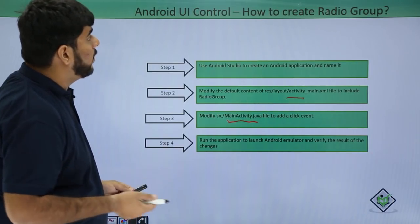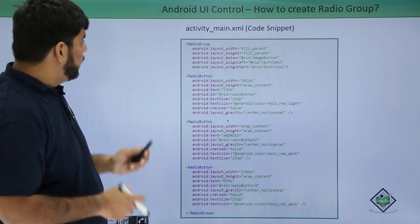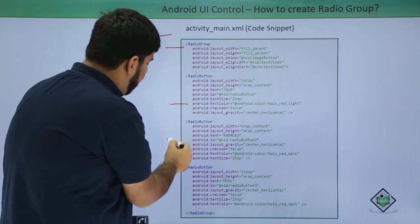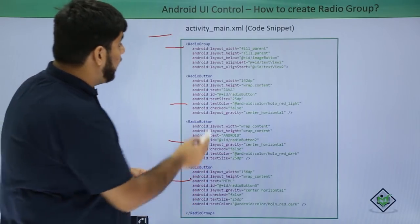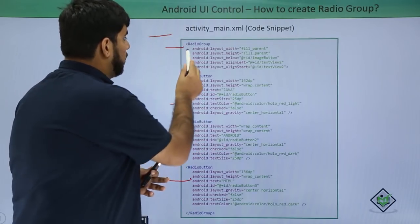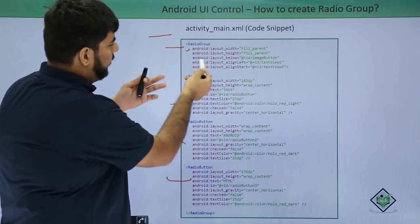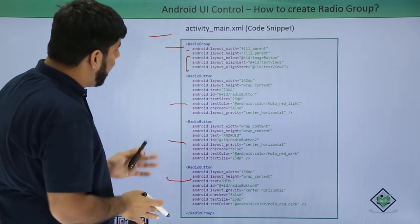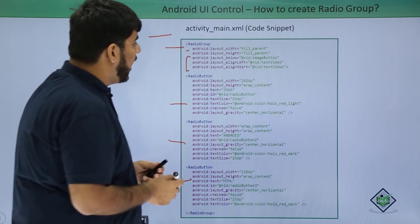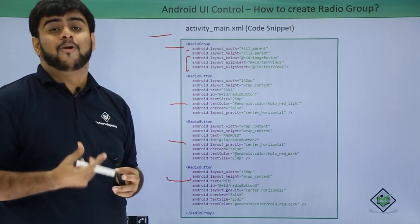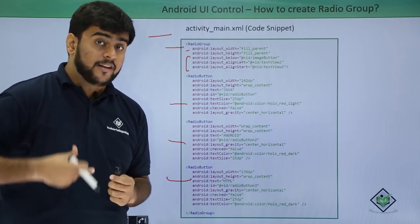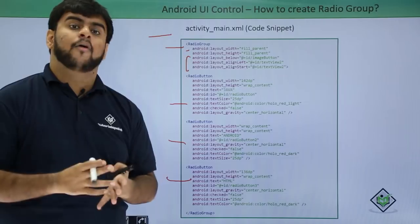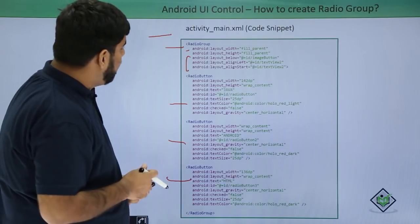So here is my activity_main.xml. I take up a radio group and in the radio group I can have any number of radio buttons that I want, then end the group. We can have default properties like layout height, layout width, and since it is in a relative layout, we have the relative layout attributes. This radio group will have an id, which is the main property for the radio group, and we will be able to identify the radio group based on its id.